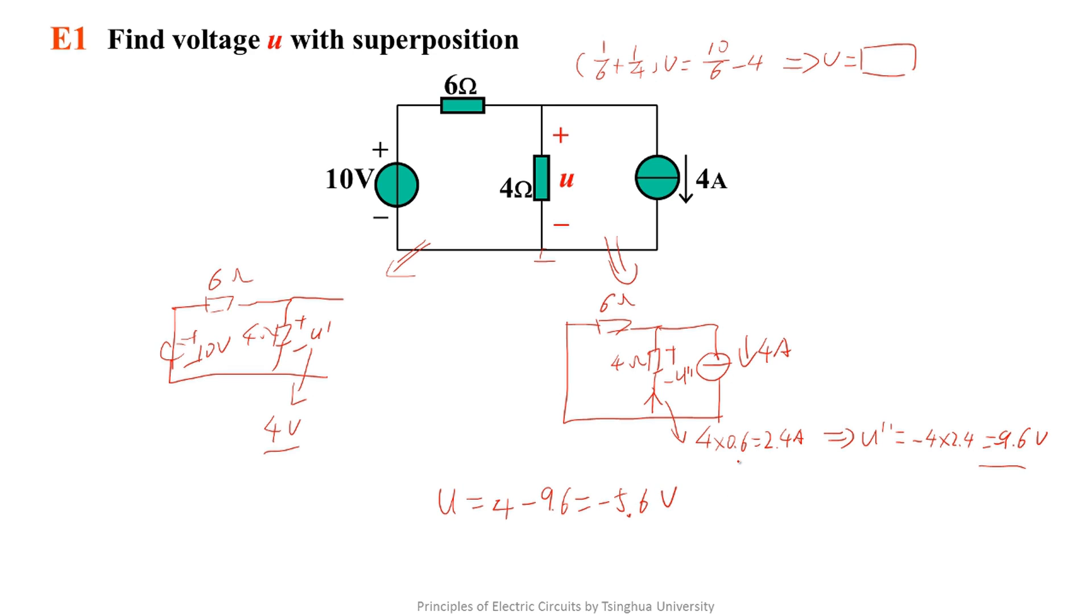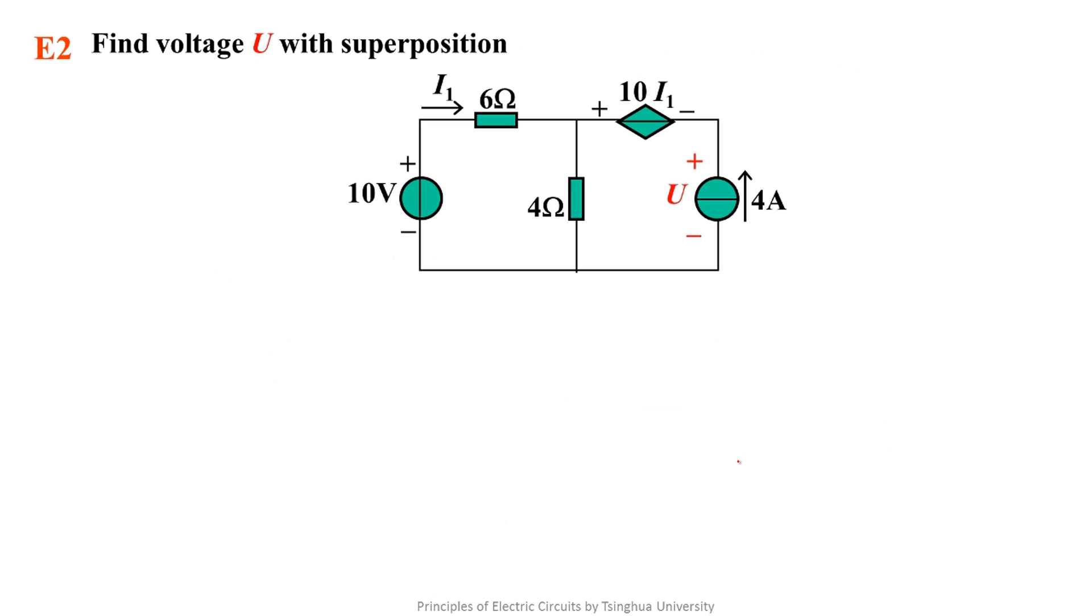This is exercise 1. Now we use the superposition theorem to solve exercise 2. It's similar to the first circuit we discussed since it has a current controlled voltage source. According to the superposition theorem, when the voltage source takes effect alone and the current source takes no effect, the circuit is like this.